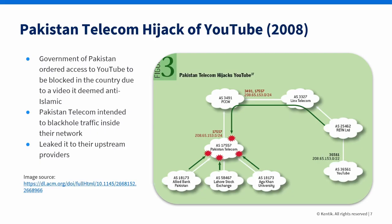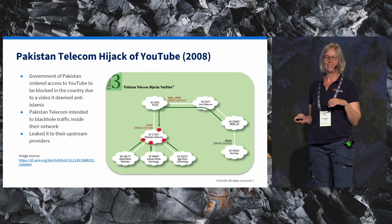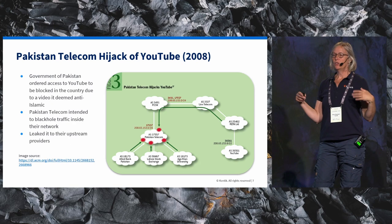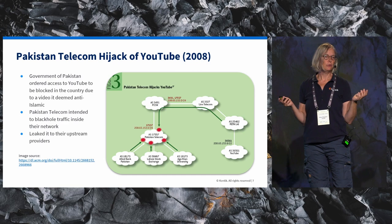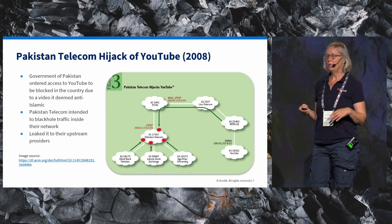The most famous incident of that was back in 2008, when YouTube was hijacked by Pakistan Telecom. There was content on YouTube that the government in Pakistan did not feel their citizens should be able to watch. So they issued an order: you must black hole the traffic to YouTube. And Pakistan Telecom did that. Unfortunately, they leaked — they did it by de-aggregating and placing a null route for the de-aggregated prefixes inside their network.